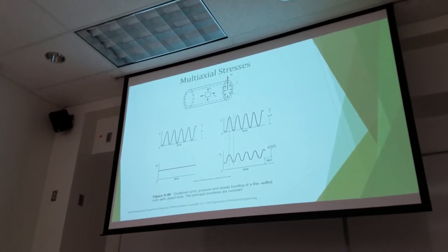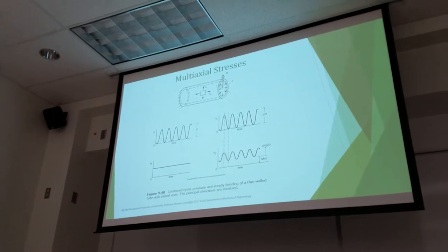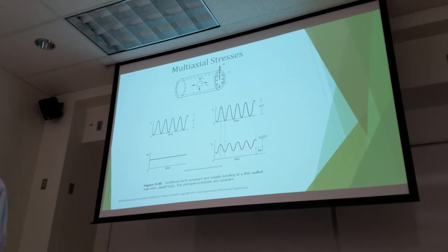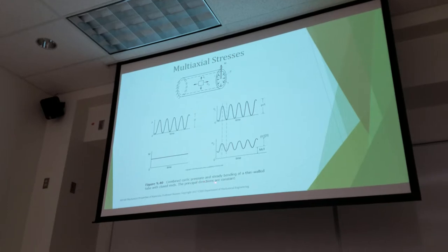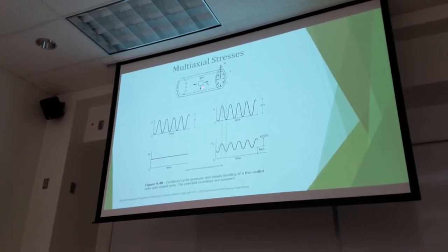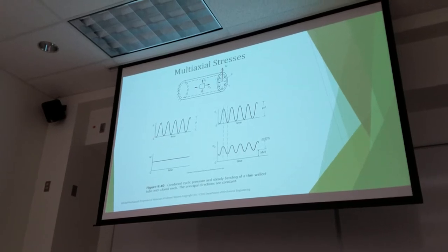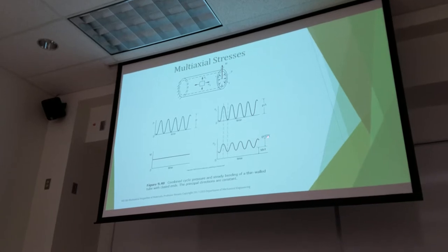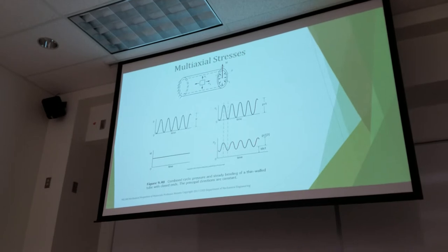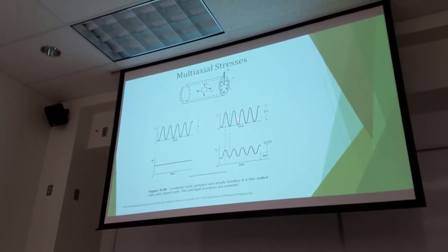If we look at how a pressure vessel cycles — combined cyclic pressure and steady bending of a thin-wall tube with closed ends — notice we've got a moment here, we're bending this thing and pressurizing it. From the pressure we get hoop tension, and from the bending we get some kind of a mean stress. Notice MR over I and PR over 2T. We have sigma 1 and sigma 2 acting on the element — where sigma 2 is in the longitudinal direction and sigma 1 is the hoop stress from pressure.